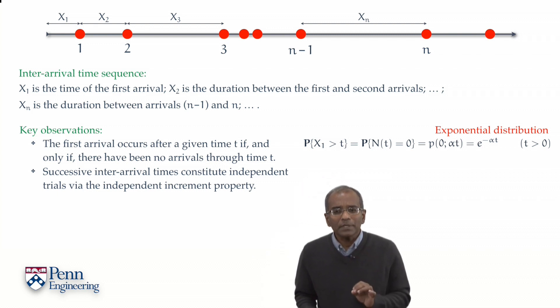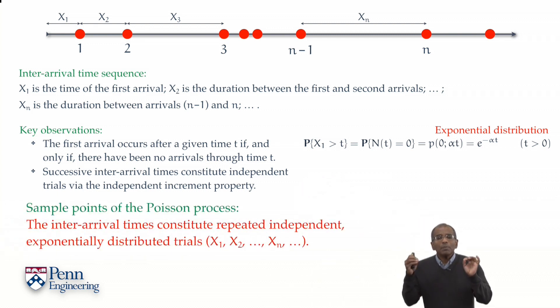And so, what have we discovered? The sample points of the Poisson process are characterized by this infinite sequence of inter-arrival times. And this infinite sequence of chance-driven inter-arrival times represent independent trials, each with a common underlying exponential distribution, characterized for the first arrival. And there you have it. This, now, is the underlying sample space for this rich problem.